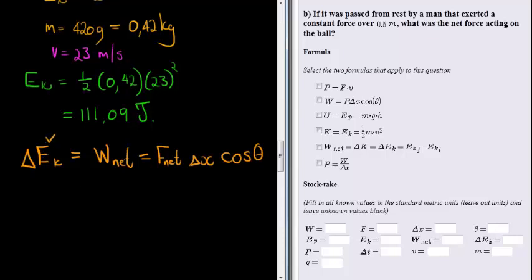We have the change in kinetic energy, since we have the future kinetic energy. Initially it was at rest, so it was zero. We have, therefore, the net work done. This is the work-energy principle.